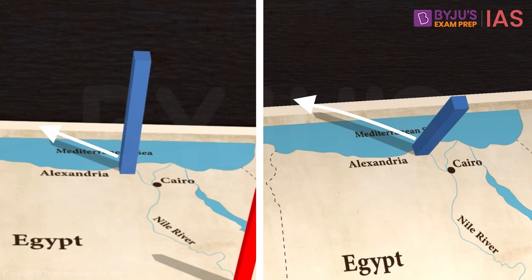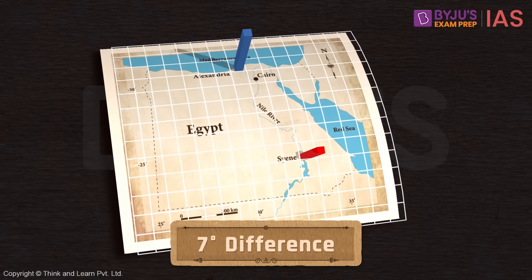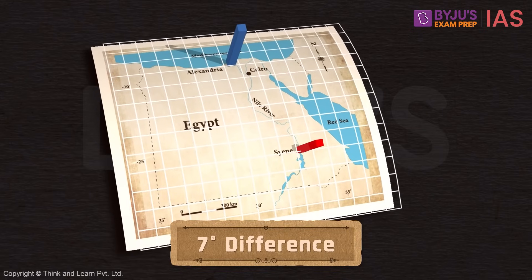Eratosthenes observed this difference in the length of shadows and calculated that there has to be a seven degree difference in both the places to account for this amount of difference in shadow lengths.